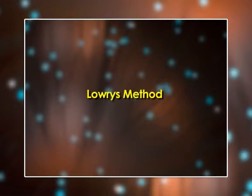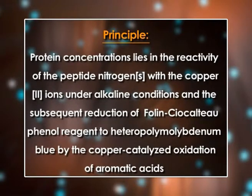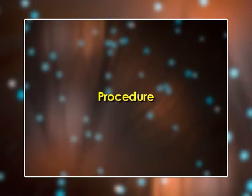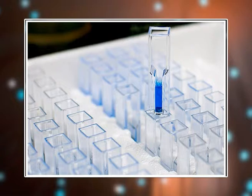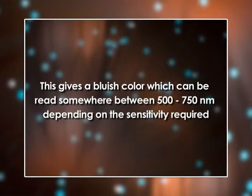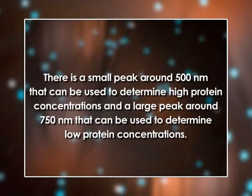The second method is Lowry's method. The principle lies in the reactivity of peptide nitrogen with copper ions under alkaline conditions and the subsequent reduction of the Folin-Ciocalteu phenol reagent to heteropolymolybdenum blue by the copper-catalyzed oxidation of aromatic amino acids. The Lowry method combines the biuret reagent with another reagent that reacts with tyrosine and tryptophan residues in proteins, giving a bluish color readable between 500 to 750 nanometers. A small peak around 500 nm is used for high protein concentrations and a large peak around 750 nm for low protein concentrations.